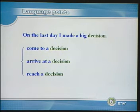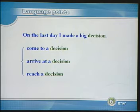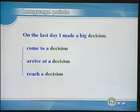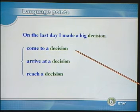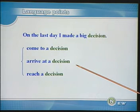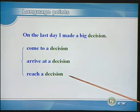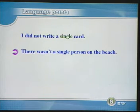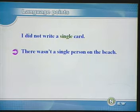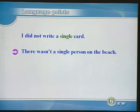On the last day, I made a big decision. 最后一天呢,我做出了一个很大的决定。Make a decision — 做决定。做决定还可以有其他几种说法:come to a decision, arrive at a decision, reach a decision。I did not write a single card. 我连一张明信卡也没有写。Single强调是单数的概念。There wasn't a single person on the beach — 海滩上一个人也没有。